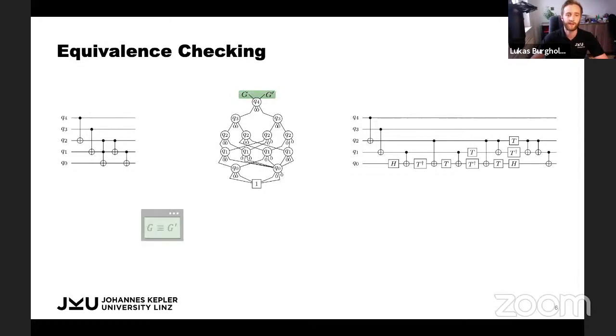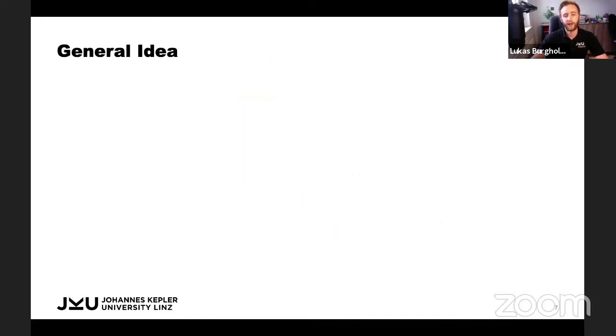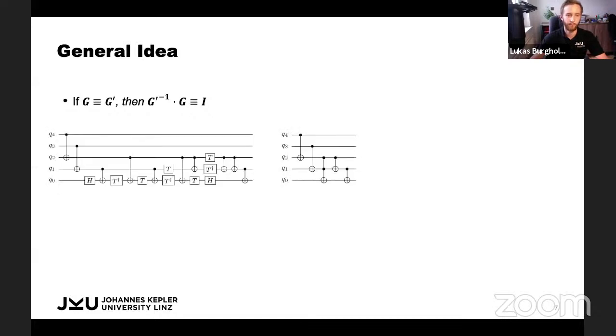But there's a problem with this approach because you need to potentially construct two very large decision diagrams. These are still exponential in the worst case. So we can do better than that. Let me illustrate the general idea now. It is based on the observation that whenever you have two circuits and they are equivalent, then the inverse of the first circuit concatenated with the second circuit resembles the identity.